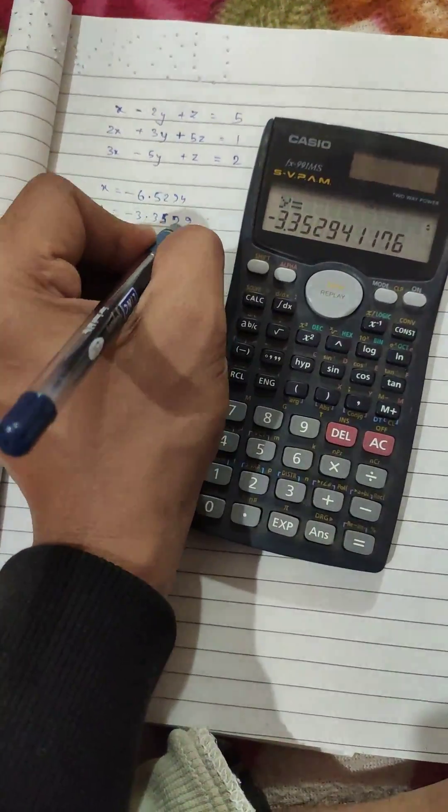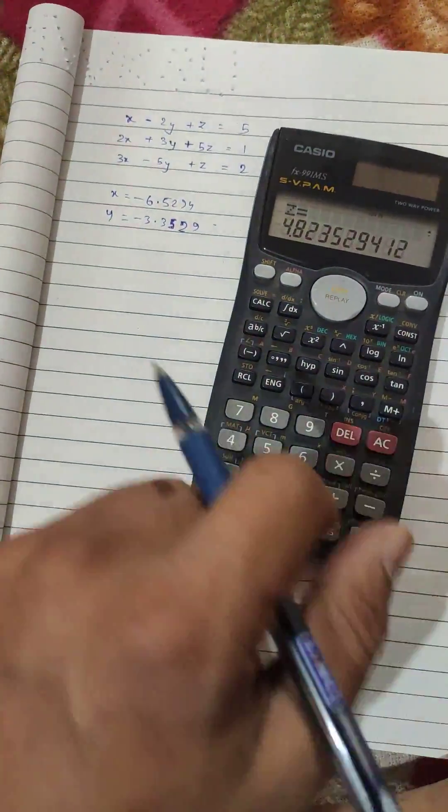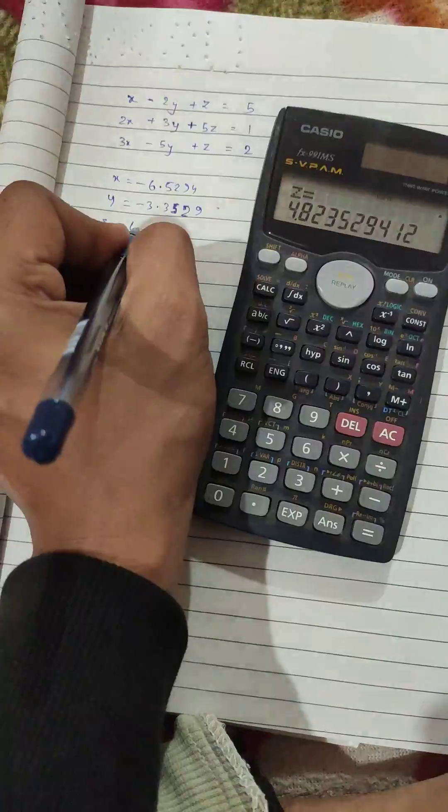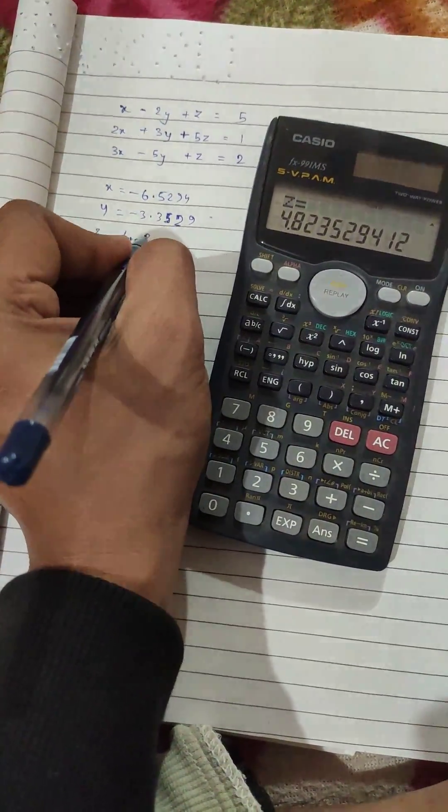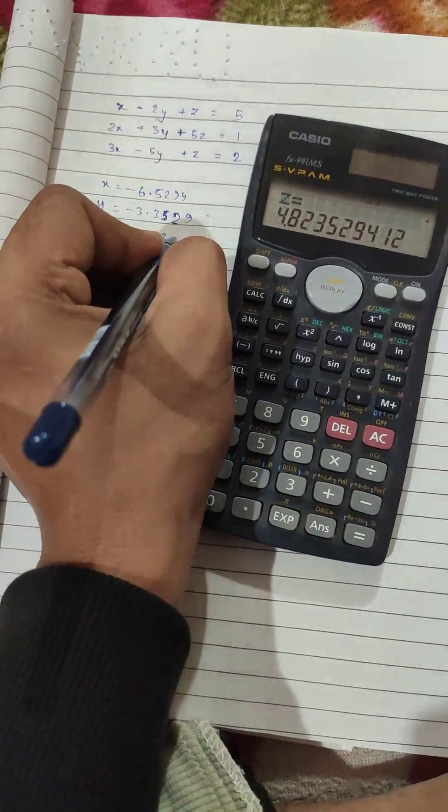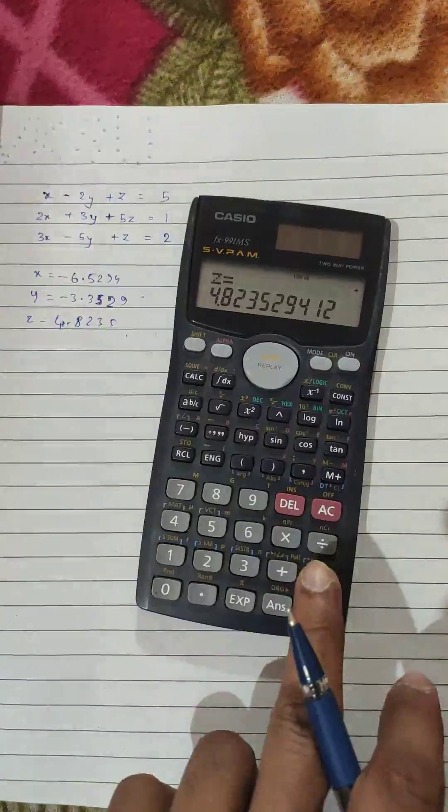Z is 4.8235. So this is how you solve an equation in three variables on your calculator.